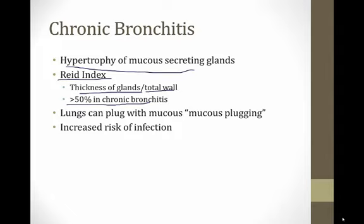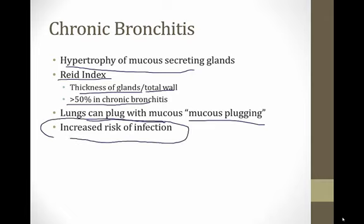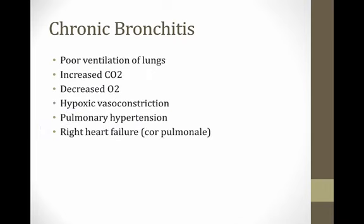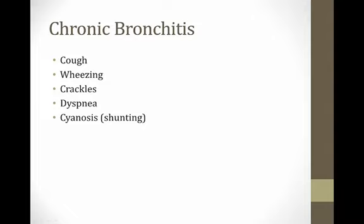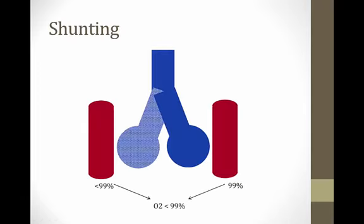Another thing that can happen is the lungs can plug with mucus — mucus plugging — which shuts off portions of the lung to ventilation. There is also an increased risk of infection, and people with chronic bronchitis often get pulmonary infections. The physiologic consequences are poor ventilation, so CO2 rises and O2 falls in the blood. Because of the low oxygen level, you can get hypoxic vasoconstriction in the lungs, leading to pulmonary hypertension, and if untreated, eventually right heart failure from cor pulmonale. Signs and symptoms include cough, wheezing, crackles, dyspnea, and cyanosis from shunting.